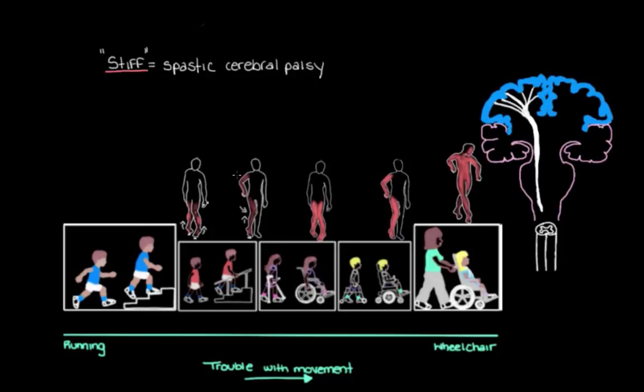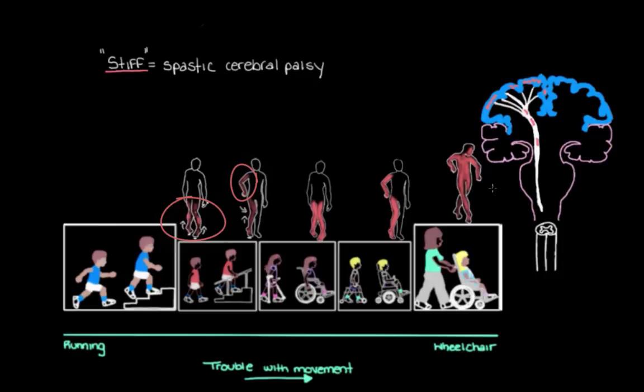On our spectrum, we have the stiff or spastic type of cerebral palsy. This type is usually due to damage or impairments of the motor cortex or the upper motor neurons in the pyramidal tracts that the motor cortex uses to control our muscles. Depending on which muscle groups are affected, how many, and how bad the stiffness is, these factors dictate where someone with spastic cerebral palsy ends up on the spectrum of movement impairments.